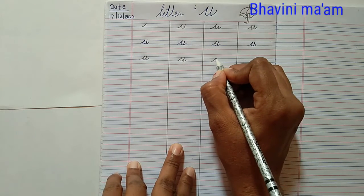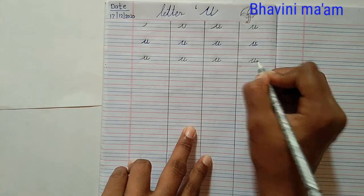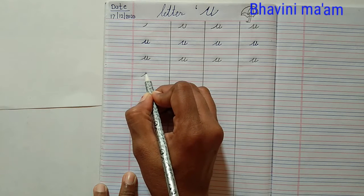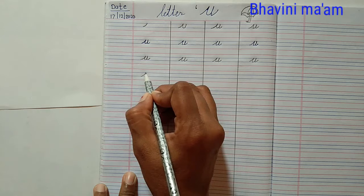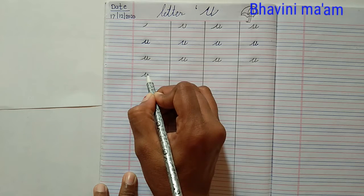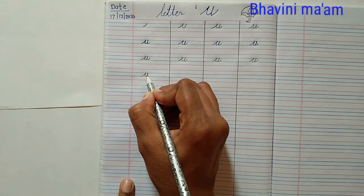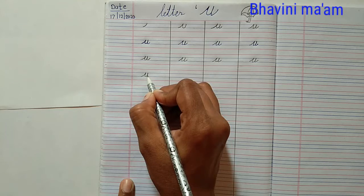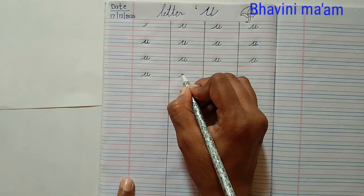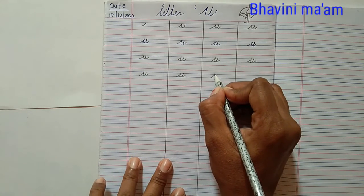Which letter is this? Cursive small letter U. Start from the second blue line, go up, touch the first blue line, come down and make a up curve. Come on the same line and curve and joining by this slanting line. Which letter is this? Yes, U for Umbrella.